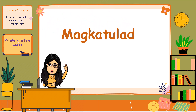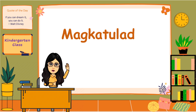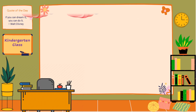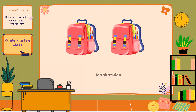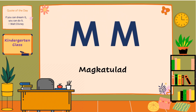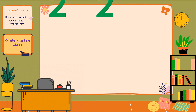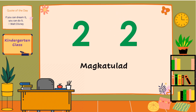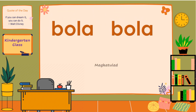Magkatulad — magkatulad ang bagay kung ito ay pareho ang kulay, hugis, pagkakasulat, at anyo. Narito ang ilang mga halimbawa ng magkatulad: ang dalawang bag ay magkatulad, ang dalawang letra ay magkatulad, at ang dalawang salita ay magkatulad.